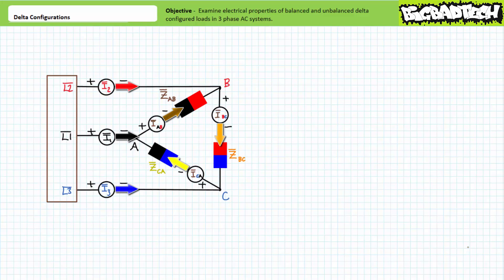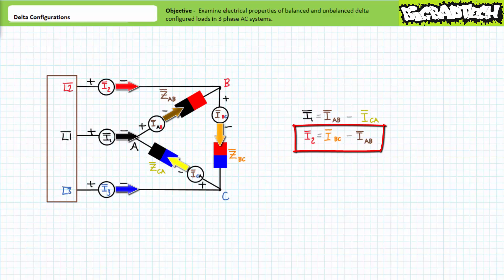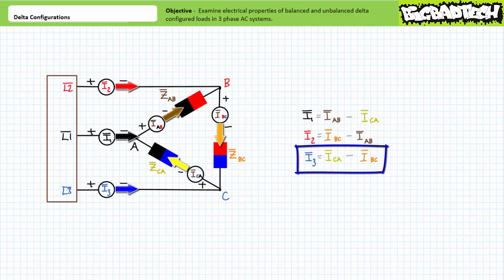Given these assumed directions of travel for line currents and load currents, let's apply Kirchhoff's current law to each of the nodes forming the delta configuration. At node A, both I1 and ICA are incoming current paths, whereas IAB is an outgoing current path. KCL demonstrates that I1 equals IAB minus ICA. At node B, both I2 and IAB are incoming, whereas IBC is outgoing: I2 equals IBC minus IAB. At node C, both I3 and IBC are incoming, whereas ICA is outgoing: I3 equals ICA minus IBC.